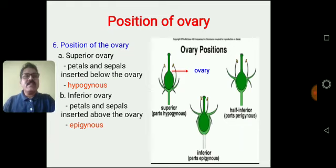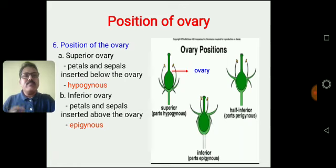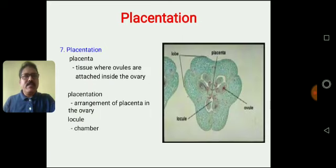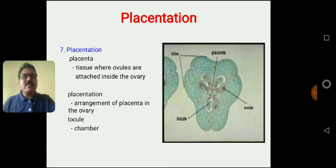These are the positions of the ovary. On the basis of position of the ovary, it can be categorized into three different types: superior ovary, inferior ovary, and half inferior ovary, depending upon the type of floral whorls arising on the flower. If we take a section passing through the ovary — that is a transverse section of the ovary — we get the placentation. Placentation is the arrangement of the ovules or carpels in the ovary.